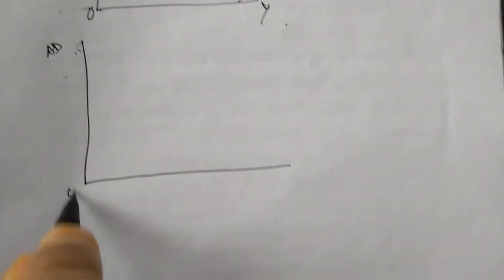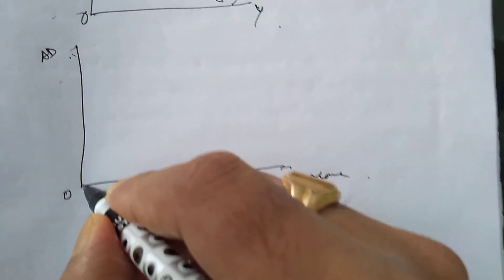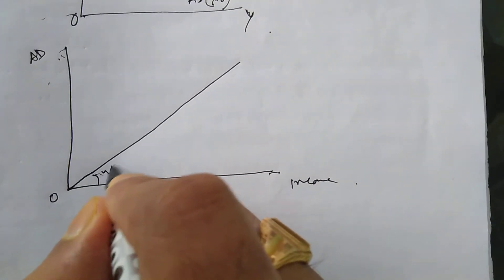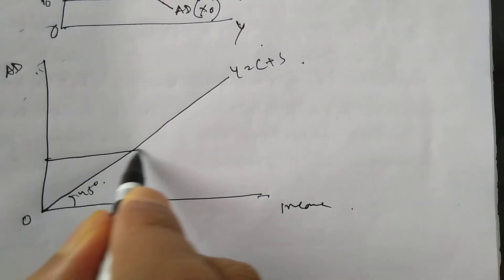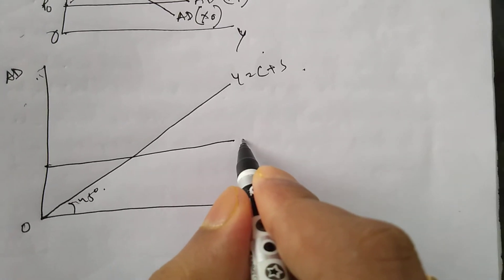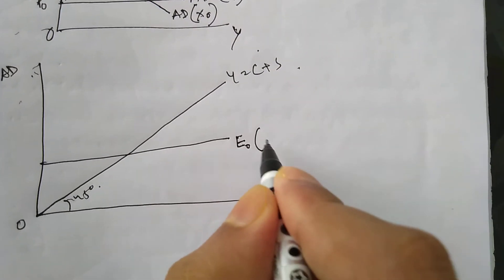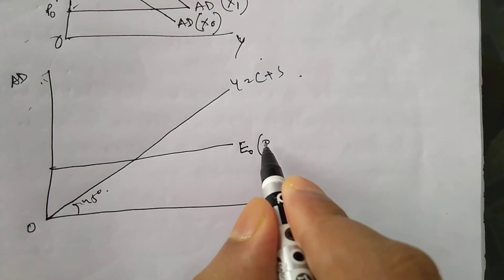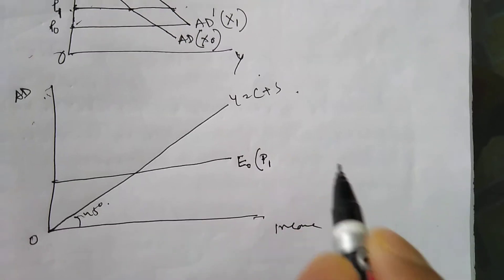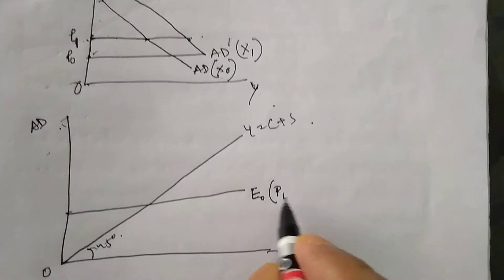In the Keynesian cross diagram, we measure aggregate demand along one axis and income or output along the other axis. We are already familiar with this 45-degree line, where Y equals C plus S. Suppose our initial net expenditure is at price P1 with export level X naught.